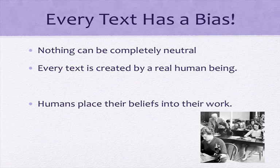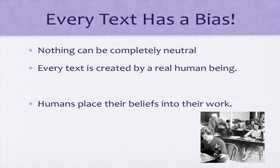One thing you'll hear us say again throughout the year is that every text does have a bias. Pretty much everything is created by a human being, and humans have their own biases. We can't be completely neutral. And so when we are completing a text, we put in our own bias. Oftentimes it's exceptionally intentional — like a sports writer writing about his own sports team. He's going to make his hometown team seem great and be critical of the opponents.